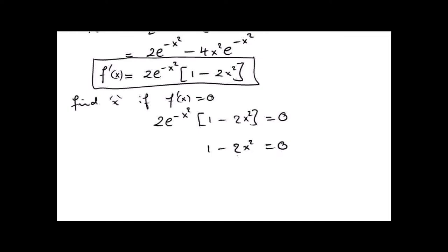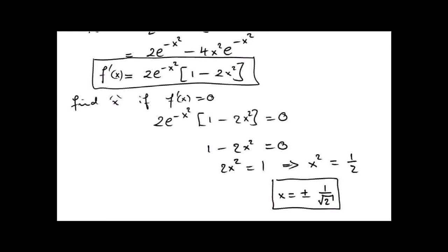That would mean 2x squared equals 1, which means x squared equals 1 half. And if x squared equals 1 half, x equals plus or minus 1 over root 2. Now, why would it be important to worry about where f dash x equals 0? It's a possible turning point for a curve. So those two points, x equals plus or minus 1 over root 2, are likely to be either local maxima or local minima of that function.